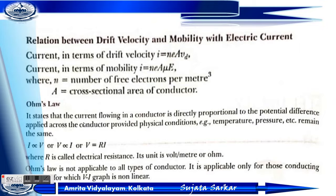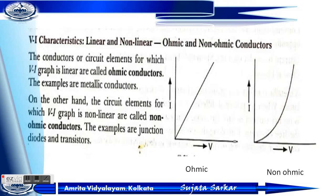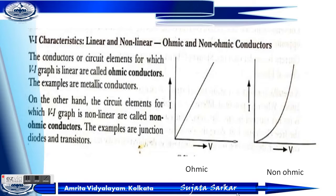The graph of Ohm's law — the V versus I graph is non-linear for a non-Ohmic conductor. For the I versus V graph, the linear graph represents an Ohmic conductor; an example is a metallic conductor. The circuit element for which the V versus I graph is non-linear is called a non-Ohmic conductor, such as a junction diode or transistor.